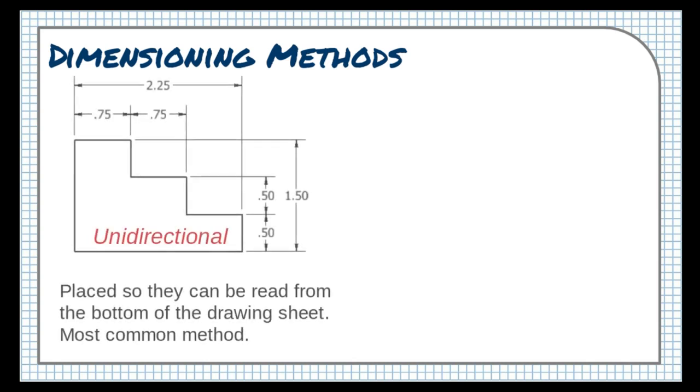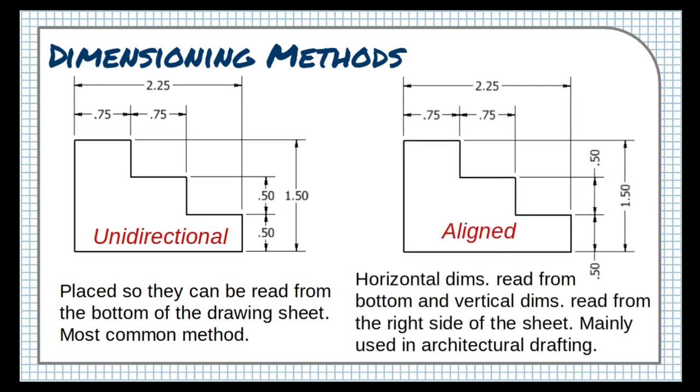Unidirectional dimensions are generally preferred because they're easier to read and put less strain on the reader. Aligned dimensions are uncommon, and are mainly used in architectural drafting to reduce the physical space that the dimensions take up on the page.